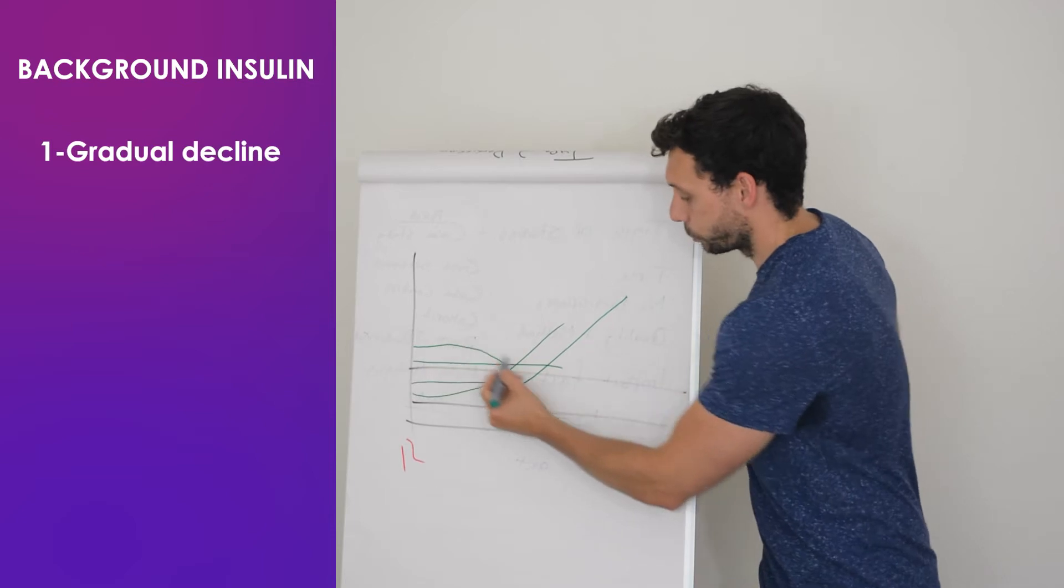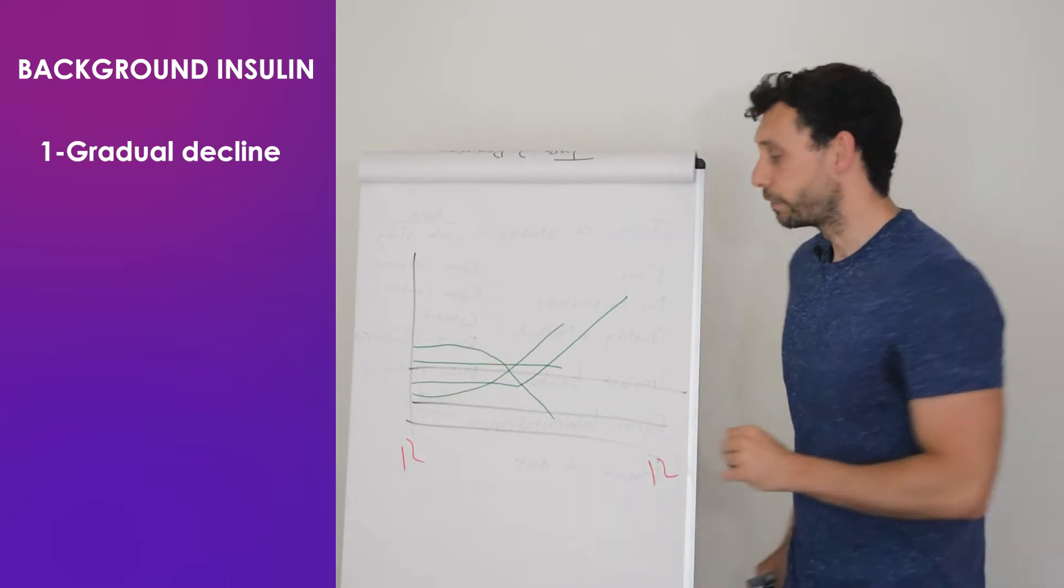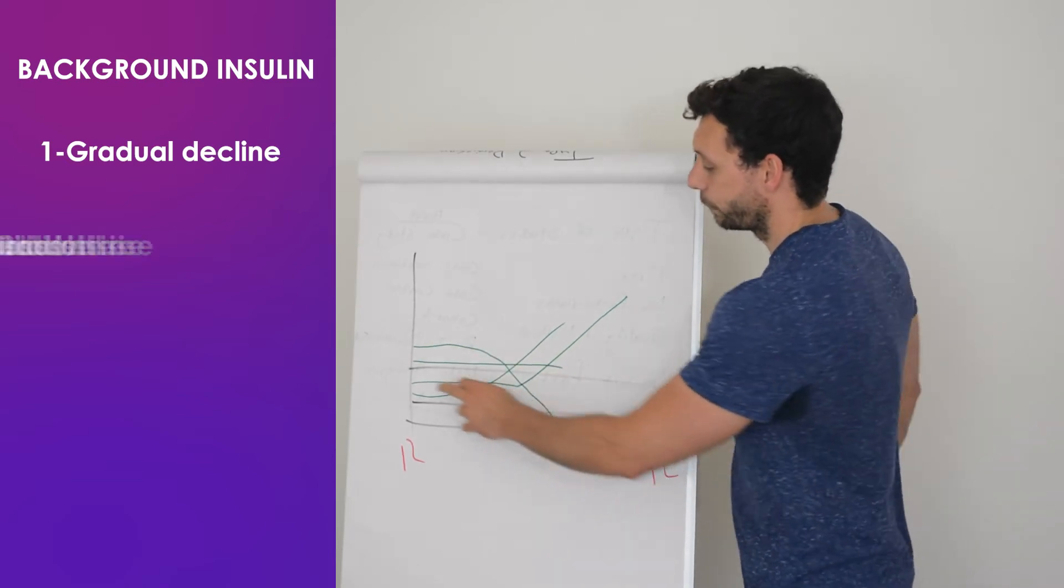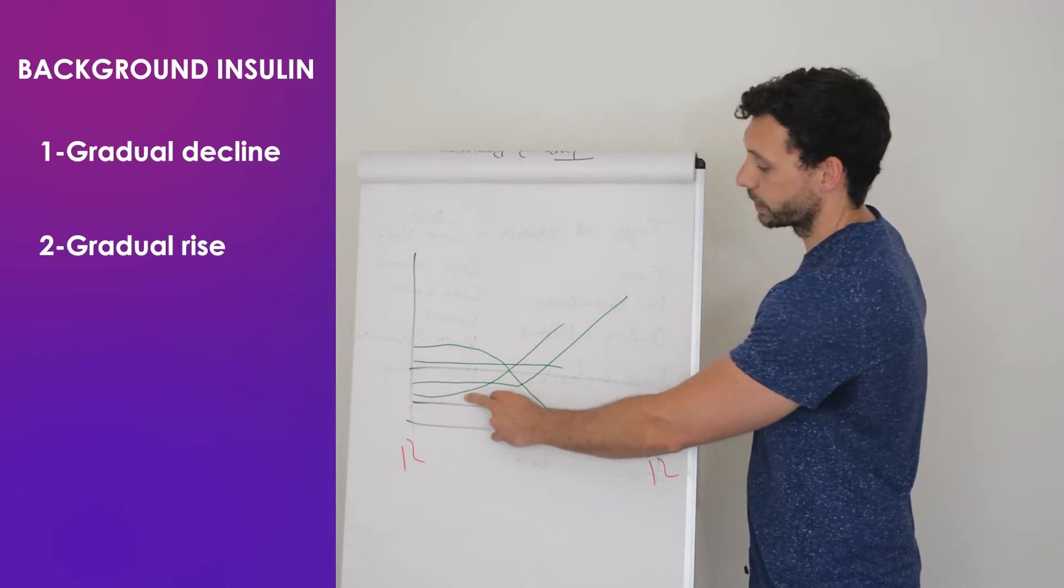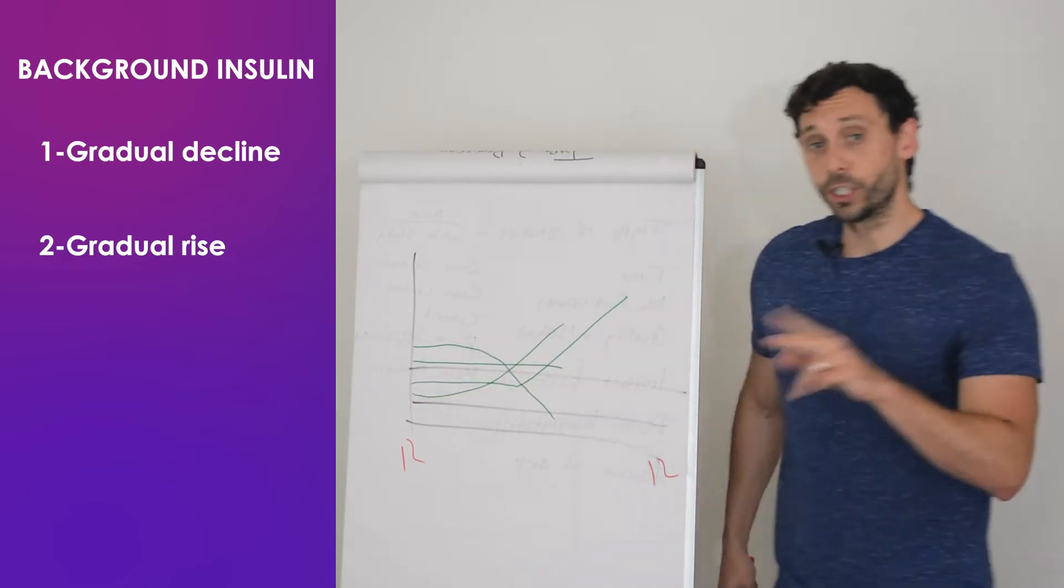So the first one, this gradual decline. This is an indication that you have too much background insulin. If it's too much background insulin, it will slowly tailor off as the night progresses. If you haven't got enough background insulin, conversely, it will gradually rise. So that's an indication to adjust the background insulin.